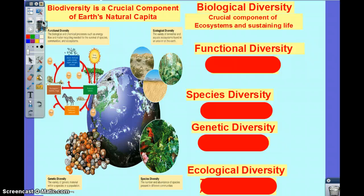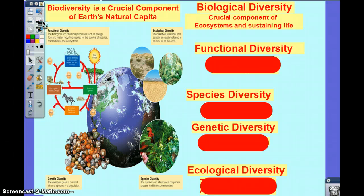We're going to go over biodiversity, which we talked about in the beginning of the year. This is a critical component to earth capital. There are different types of diversity, and these are going to be mentioned on the test and applied to many topics throughout the rest of the year: functional diversity, species diversity, genetic diversity, and ecological diversity.